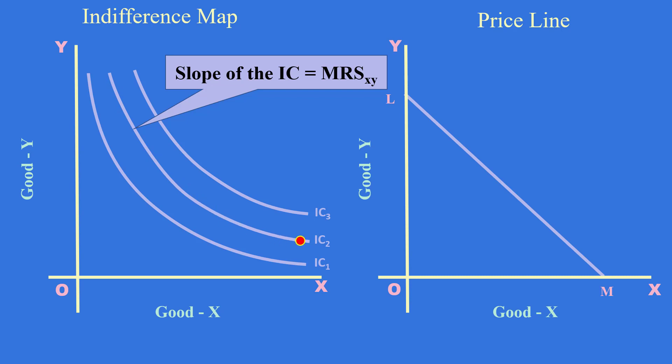Price line Lm is derived from the prices of two goods and the income of the consumer. Slope of the price line is given by the price ratio, i.e. PX by PY. It is the market rate of exchange.